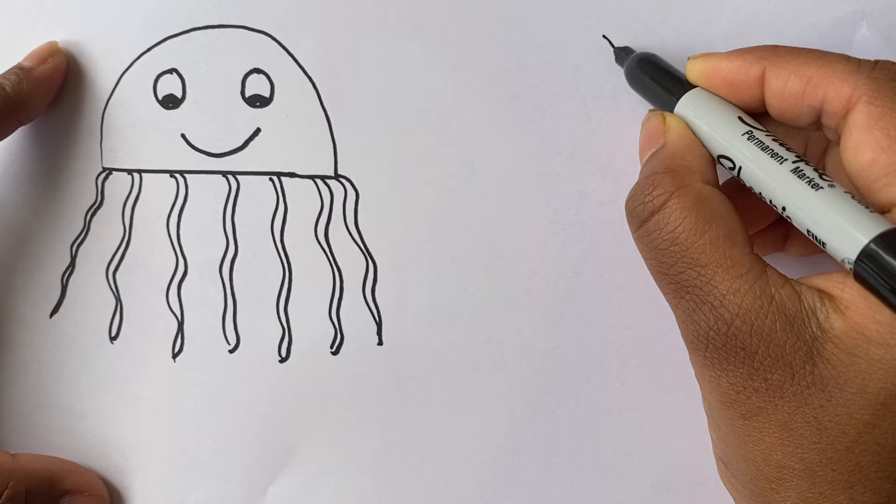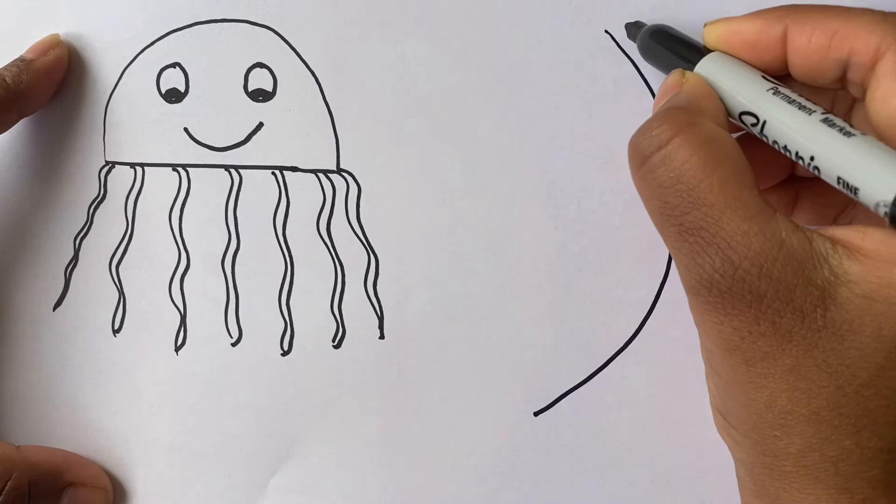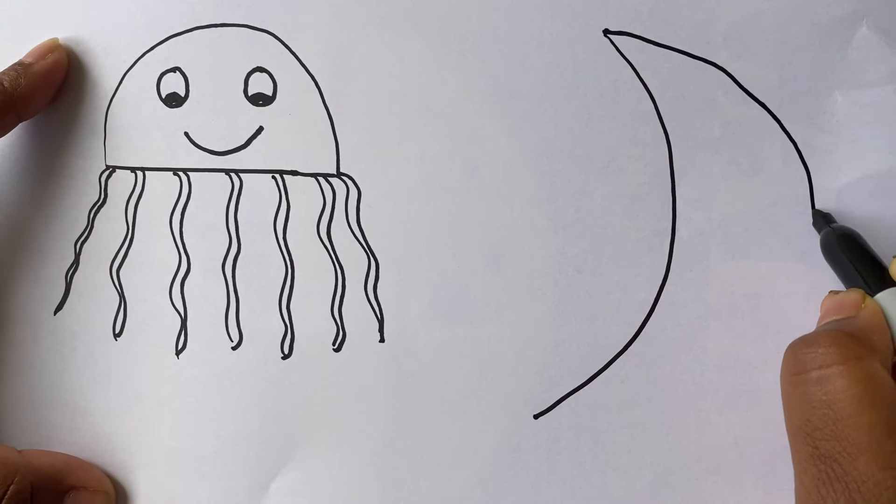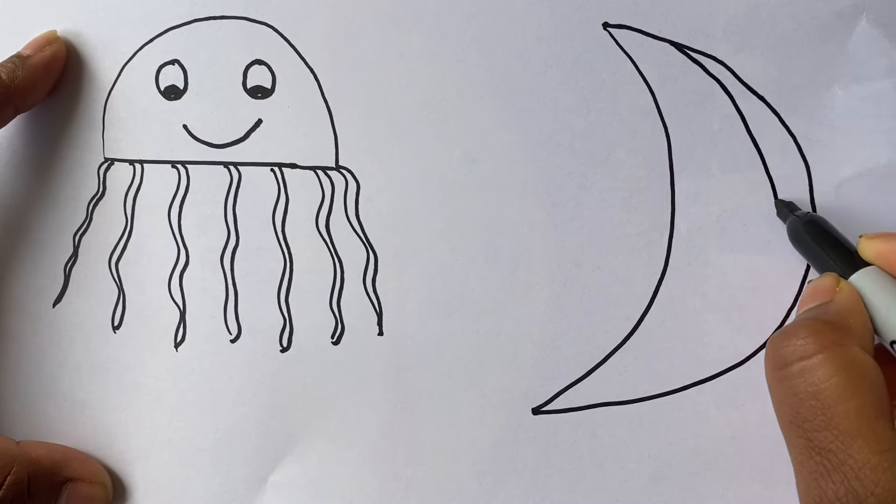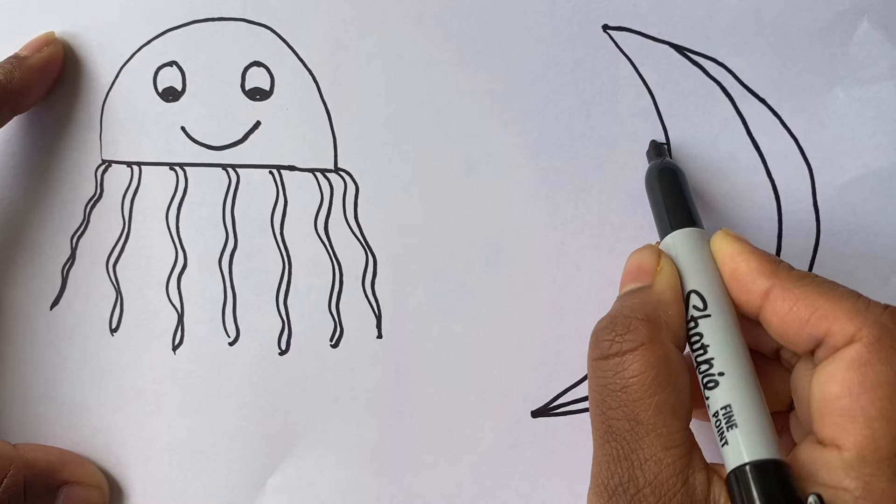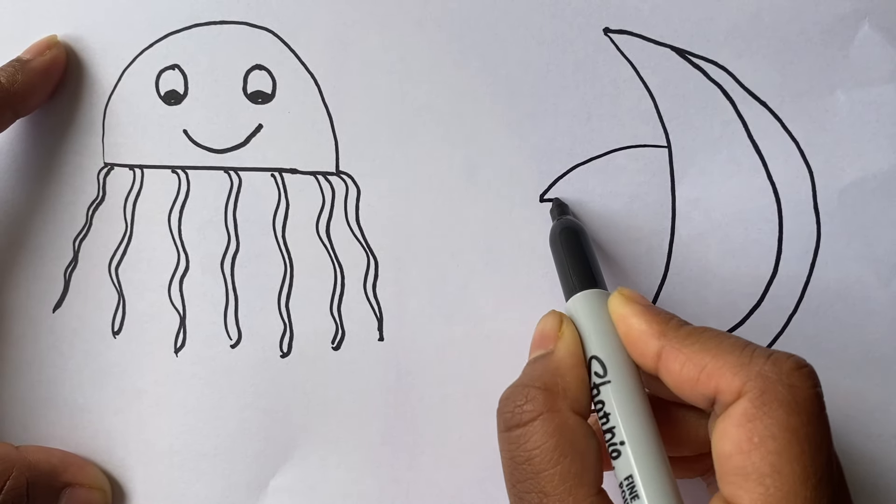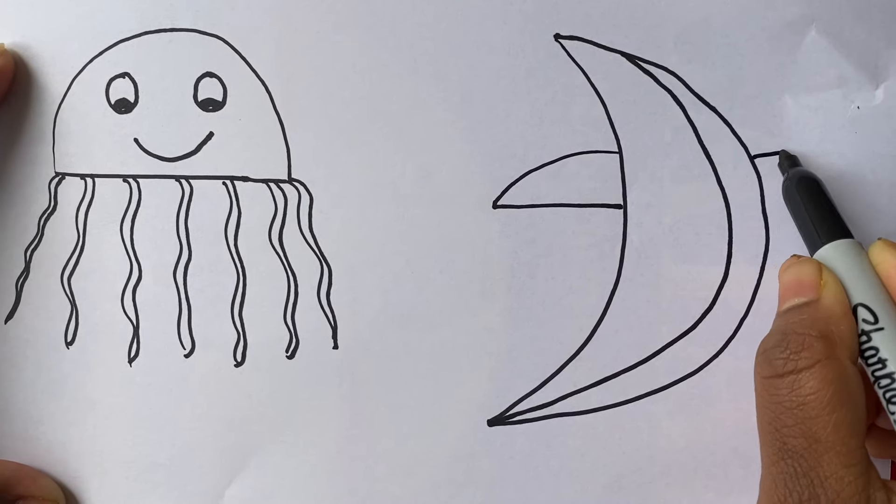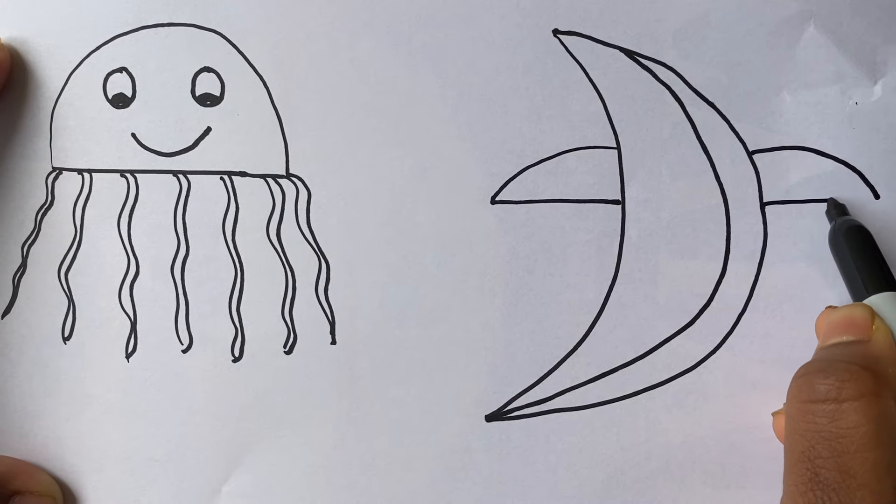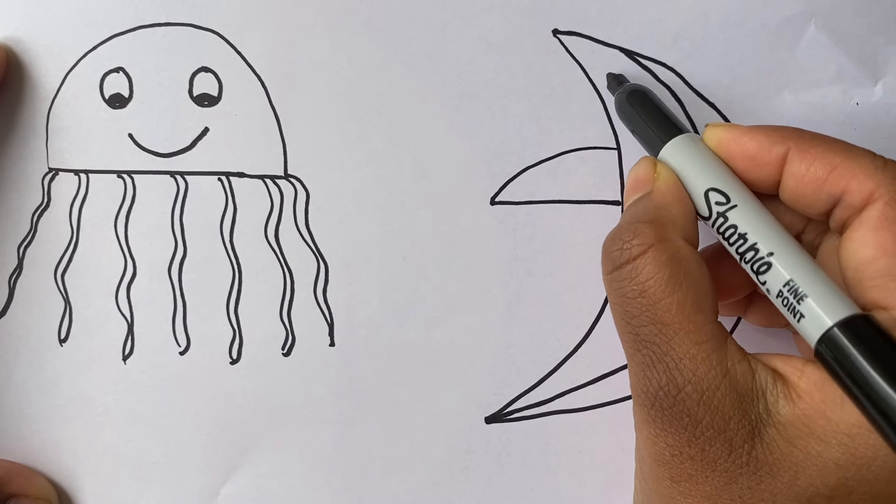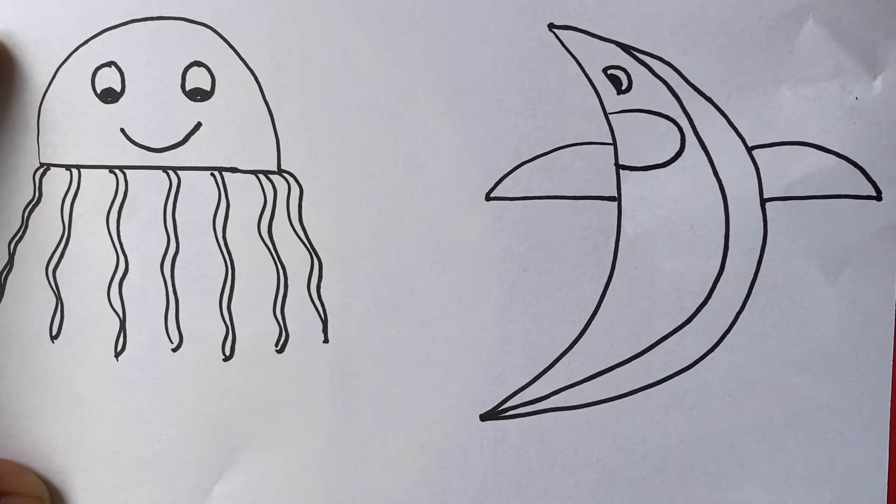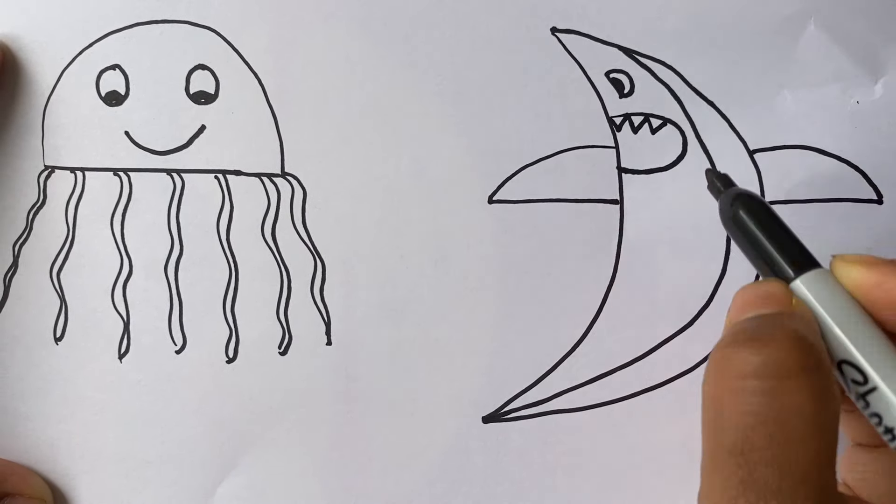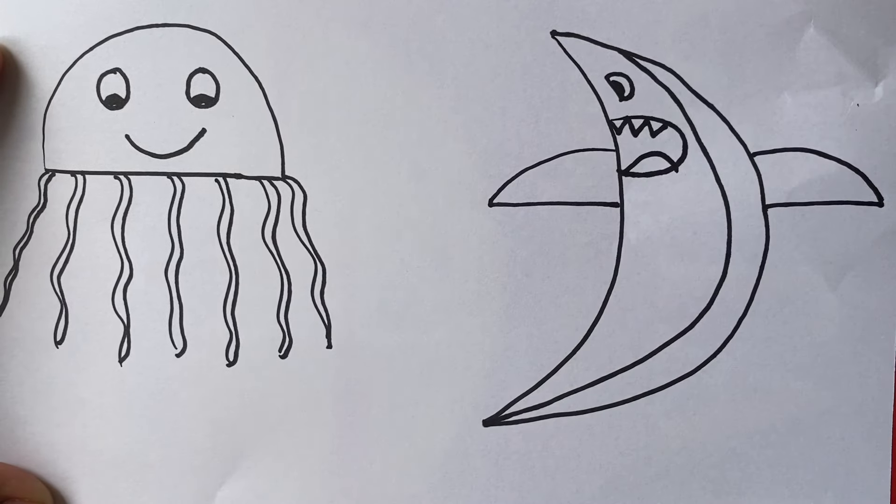Now shark. Pectoral fin, dorsal fin, eye, mouth, tail.